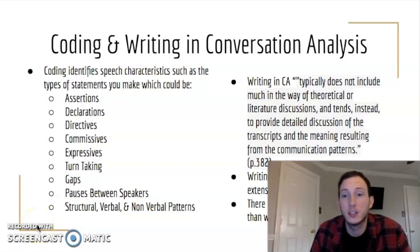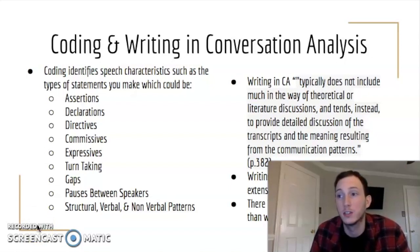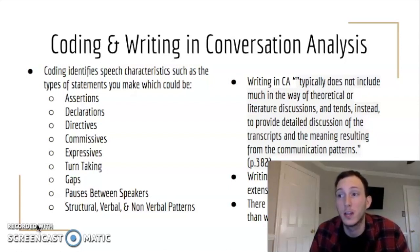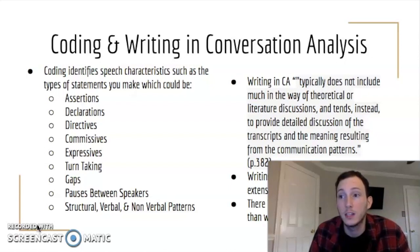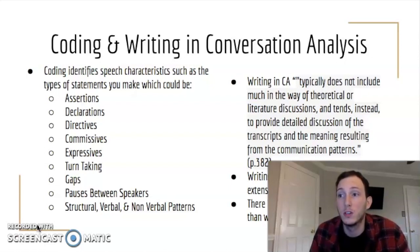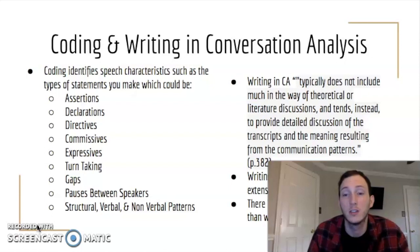Writing in conversation analysis typically does not include much in the way of theoretical or literature discussions and tends instead to provide detailed discussion of the transcripts and the meaning resulting from the communication patterns. How is a conversation organized and how do people arrange it? What is the role of each participant along with the subject matter? These things must be known to get an accurate analysis of the transcriptions. A typical conversation analysis report usually involves the use of extensive transcripts as data evidence, and with that you can interpret that there is more to a conversation than what's being said.